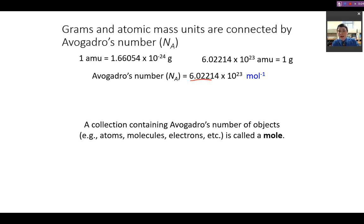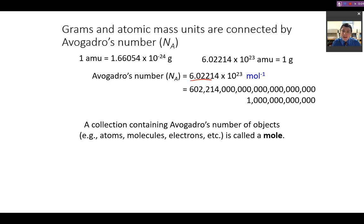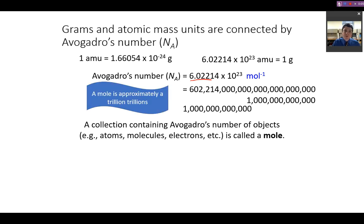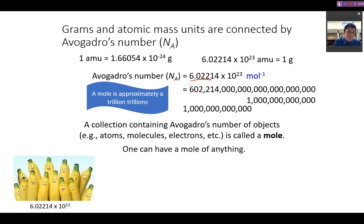If we write out Avogadro's number, it is approximately equal to a trillion trillion. So Avogadro's number is so large that if you take a trillion of something, and then take a trillion of that trillion, that is approximately Avogadro's number. It tells us the number of objects in one mole, which can be atoms, molecules, electrons, or anything — you could even have a mole of atoms or a mole of molecules.